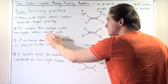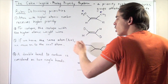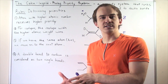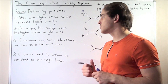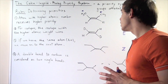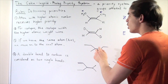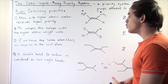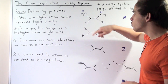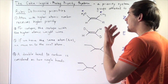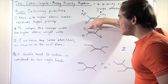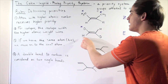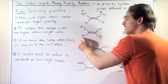Rule number two: for isotopes, the isotope with the higher atomic weight wins. Remember, two atoms are isotopes if they have the same number of protons and electrons but a different number of neutrons, so they differ in atomic weight. For example, with a carbon-carbon double bond, if one carbon is attached to an H group and a D group — where D is deuterium, the isotope of H — since D has a higher atomic weight, D has a higher priority than H.